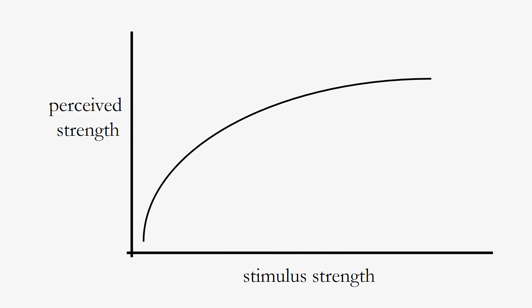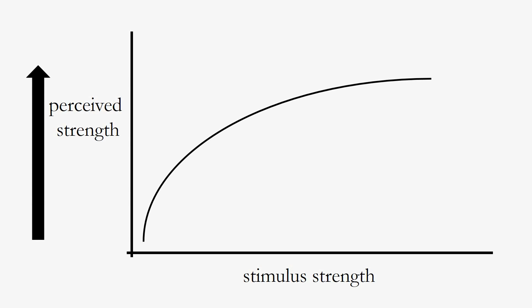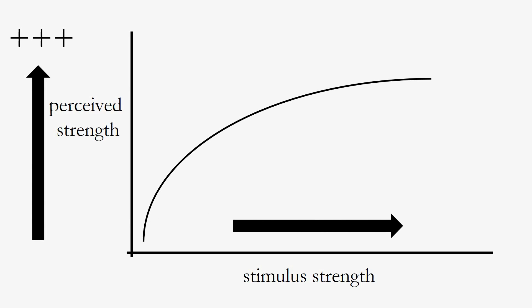Here is a basic illustration of Fechner's Law — just a curve on a graph. On the y-axis, going up and down, we have changes in your perception — your subjective experience of the stimulus you're perceiving. On the x-axis at the bottom, we have stimulus strength — how objectively strong the stimulus is. That's something you can measure with a ruler, weight, or scale. Moving up on the y-axis increases perceived strength; moving right on the x-axis means the stimulus becomes heavier, brighter, or saltier.